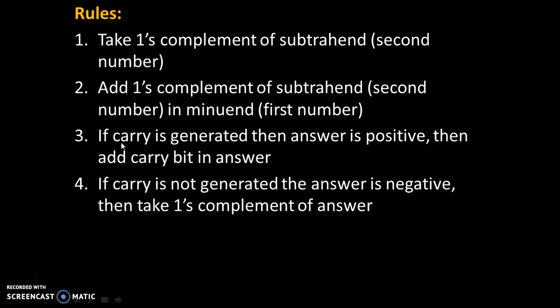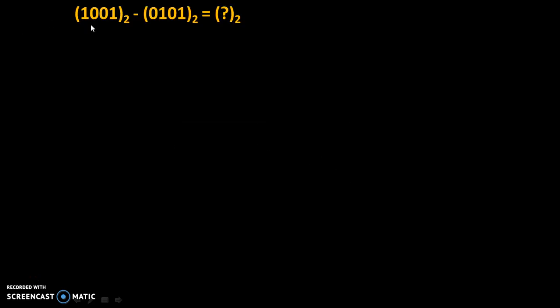There are only two types of problems: if carry is generated, and if carry is not generated. Let's see the first type of problem where a carry is generated. The problem is 1001₂ minus 0101₂ equals question mark. We need to subtract the second number from the first number and we are expecting the answer in binary form.